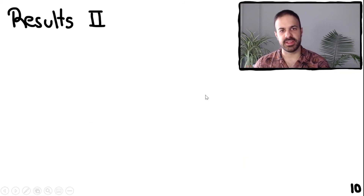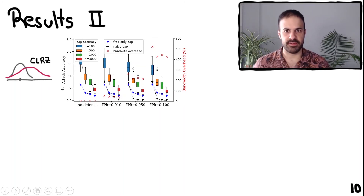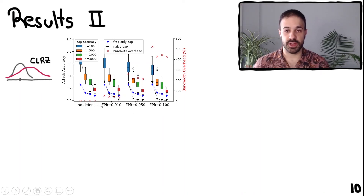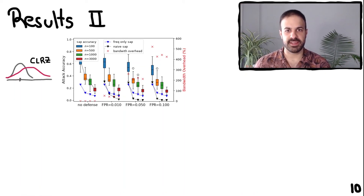Next, we evaluate our attack against the volume padding defenses seen earlier. CLRC is the defense that adds and removes keywords at random for each document. The first group of boxes represents our attack performance without any defense, with each color showing performance for different keyword universe sizes. For subsequent groups, we evaluate CLRC with increasing false positive rate — more false positives mean more protection. The black triangles represent our attack when not adapted against the defense, and in that case the defense is highly effective, reducing accuracy to near zero. However, when we adapt the attack against the defense, we are virtually bypassing it, as increasing the false positive rate barely decreases attack accuracy.